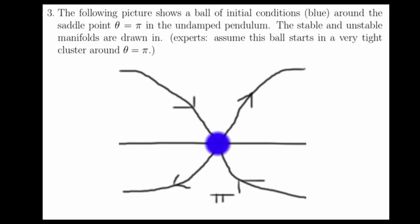For question 3, we're given the following picture of a small ball of initial conditions around theta equals pi in the undamped pendulum, with the stable and unstable manifolds drawn in. We want to assume that the ball is very tightly clustered around theta equals pi and determine what these points will look like as time evolves.